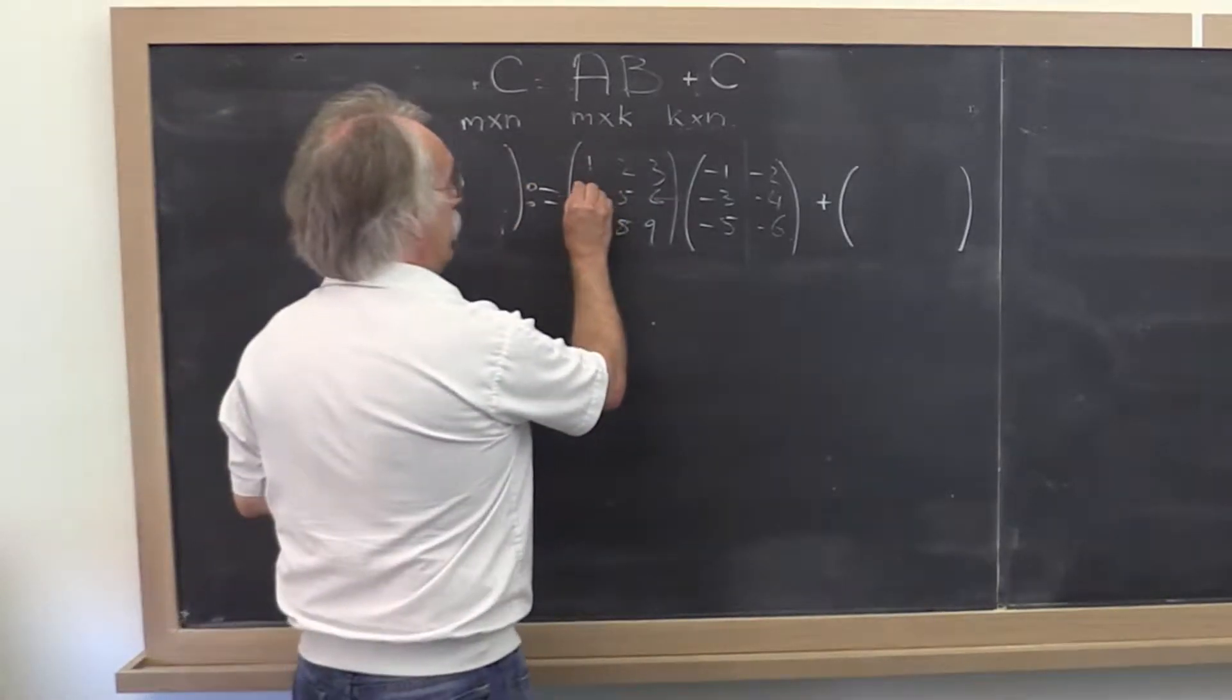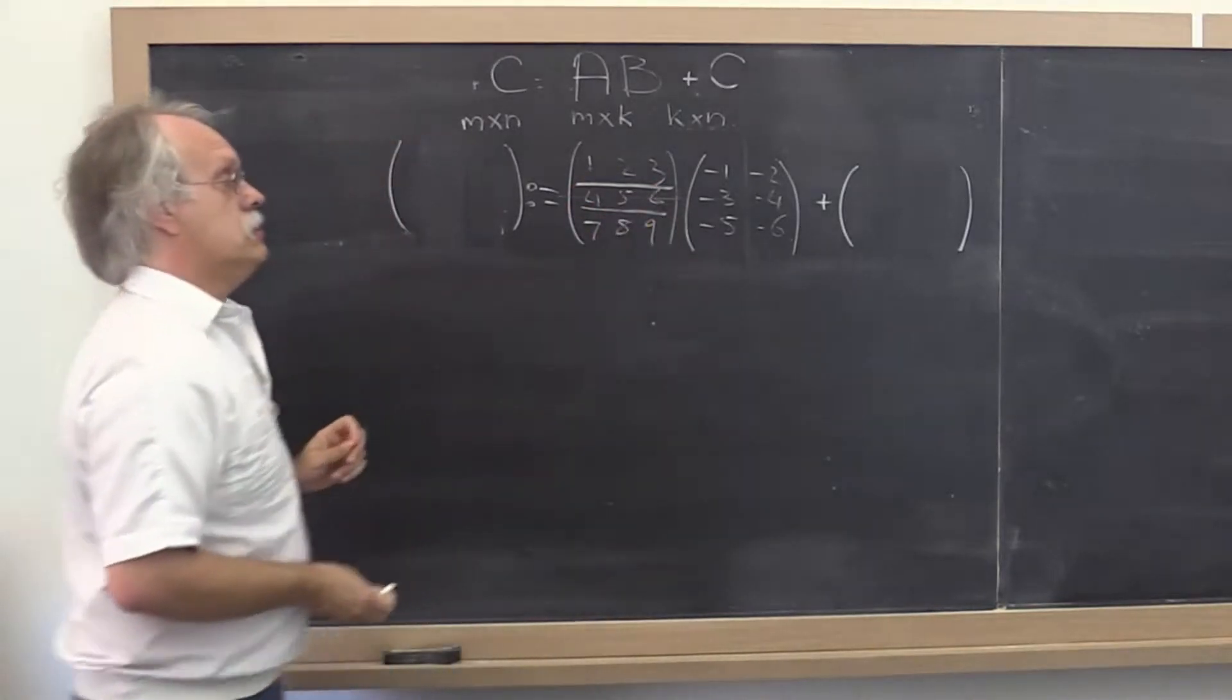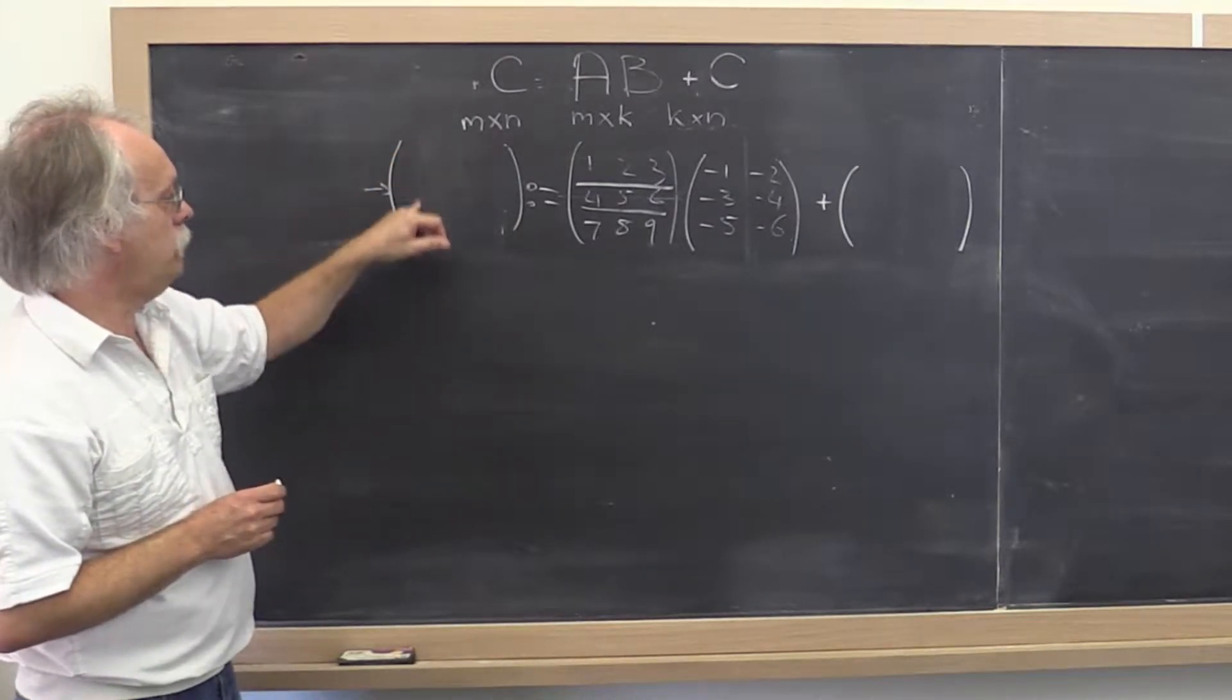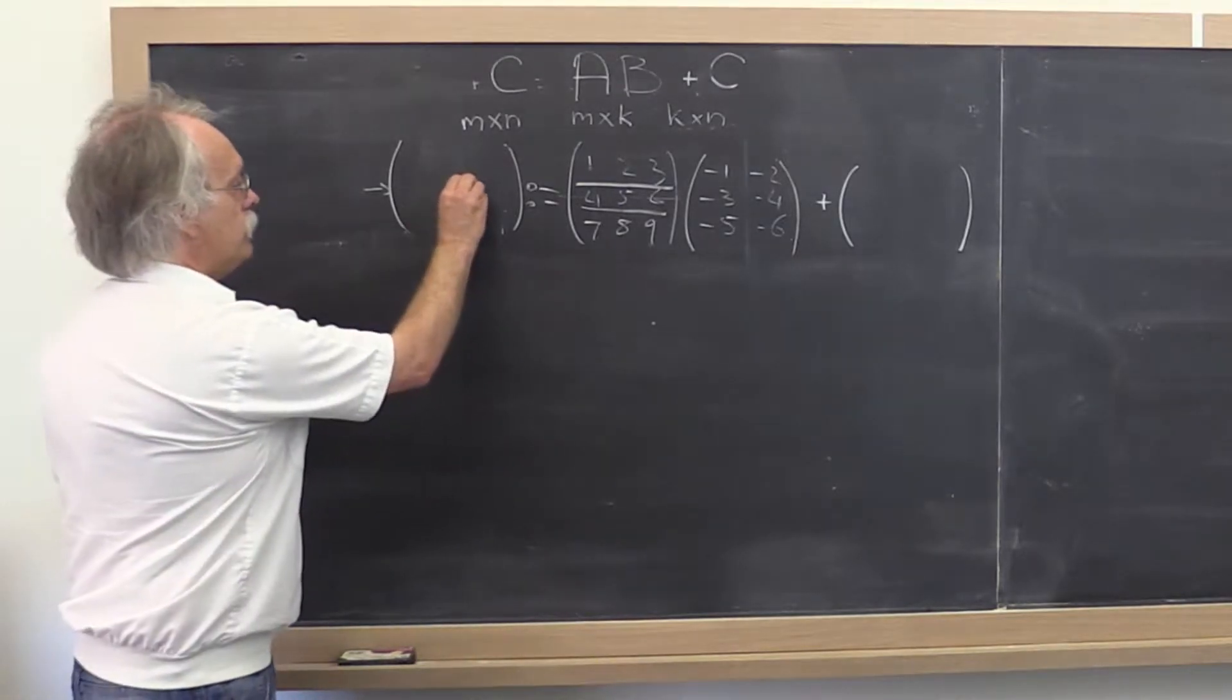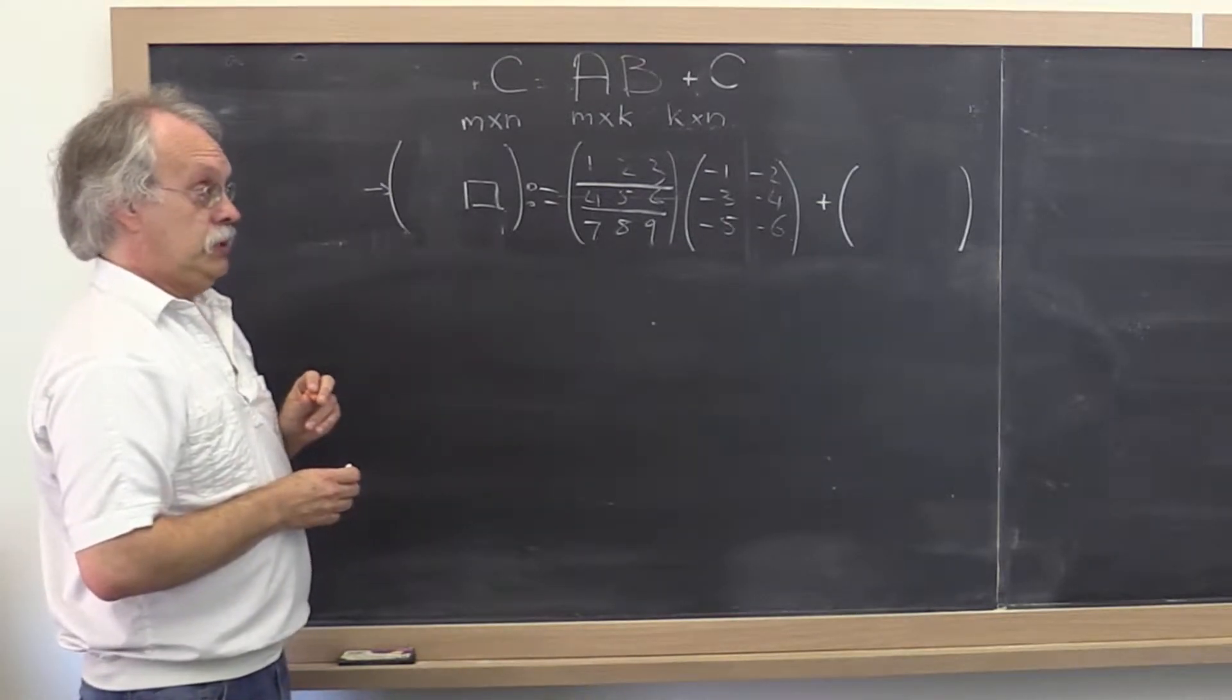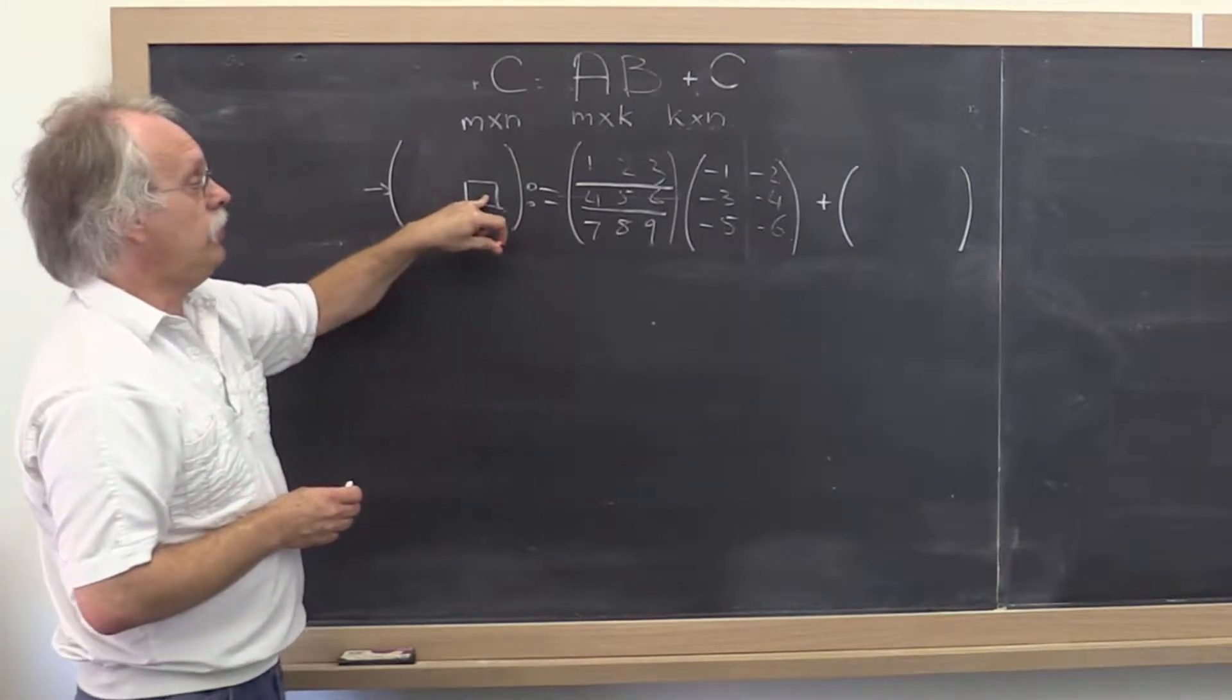So let's cut A by rows. Let's think for a second about matrix C. We know it's going to be a 3 by 2 matrix. Let's again focus on this entry right here that we focused on when we talked about computing C by columns. And let's think what goes into computing that.